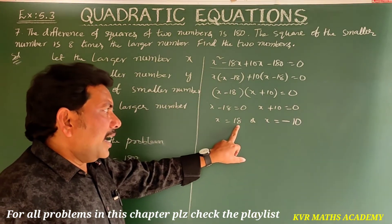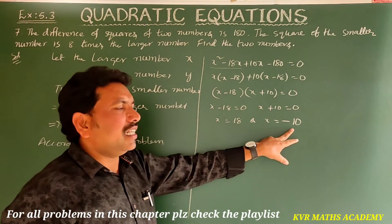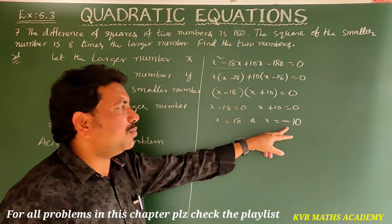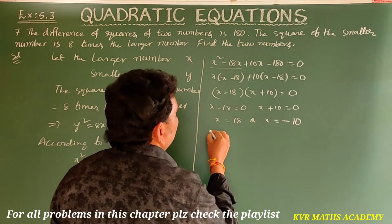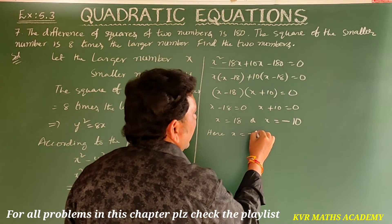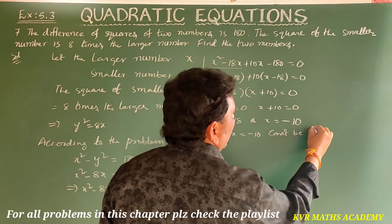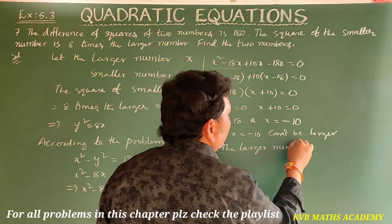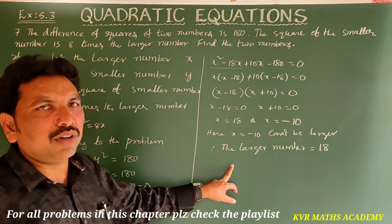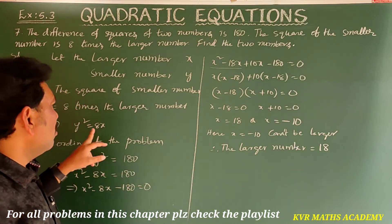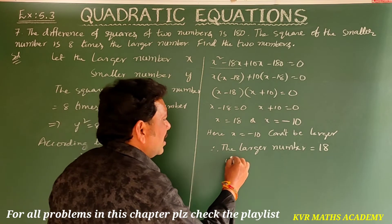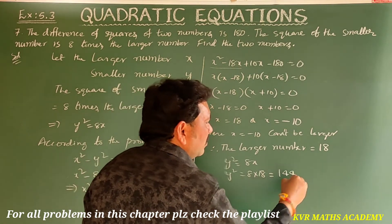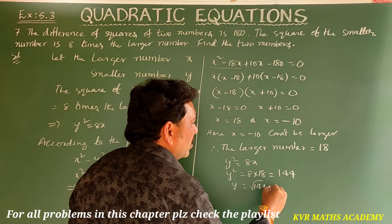We have X equals 18 and X equals minus 10. Since X is the larger number, X equals minus 10 cannot be the larger number. Therefore, the larger number X equals 18. Now for the smaller number Y, we use Y squared equals 8X, so Y squared equals 8 times 18 equals 144, which gives Y equals plus or minus 12.